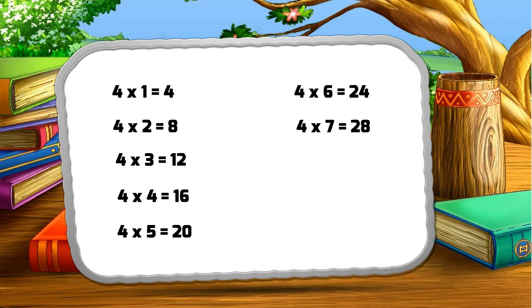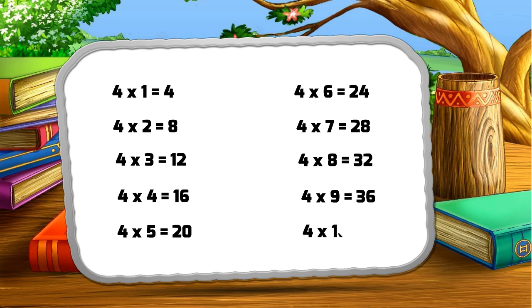Four seven za twenty-eight, four eight za thirty-two, four nine za thirty-six, four ten za forty.